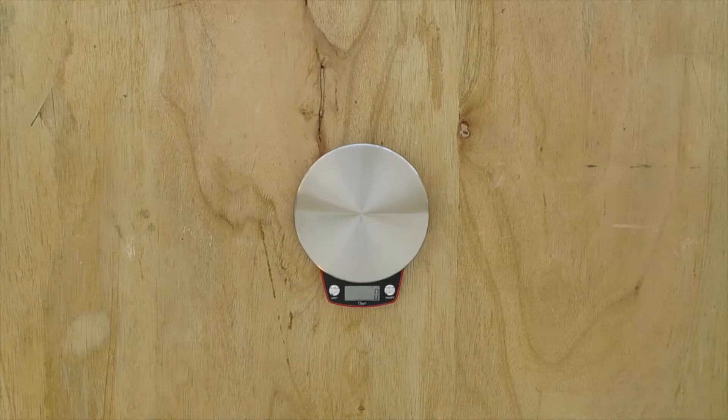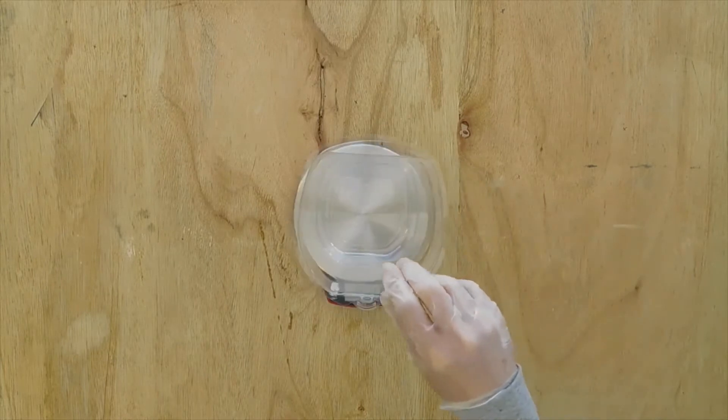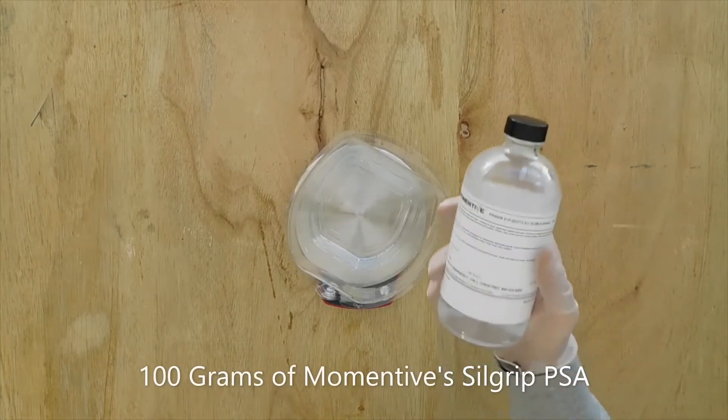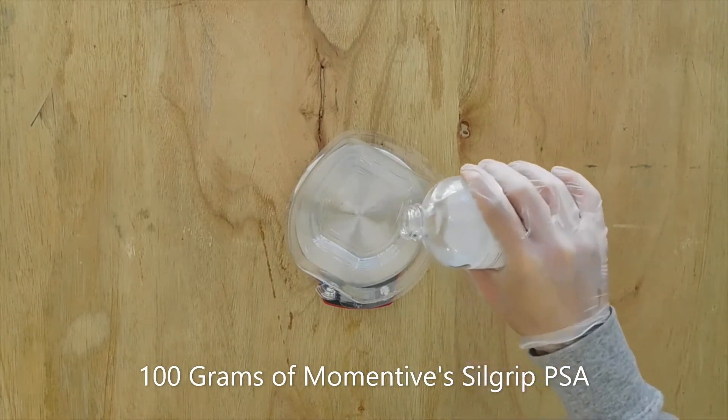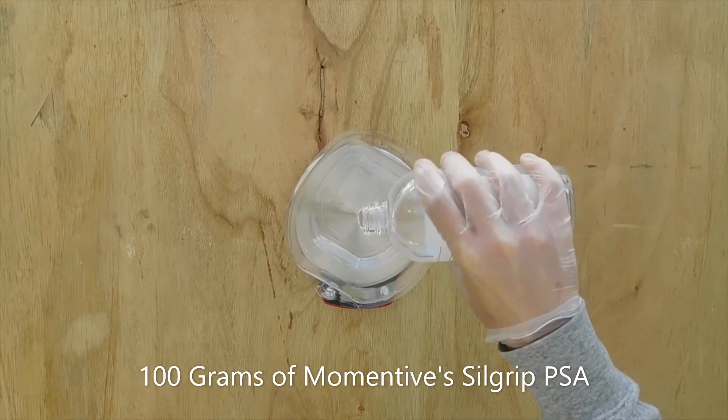Turn on your scale. Place the cup or container on the scale, then zero out the scale. Pour Momentive's SILGRIP PSA into the cup or container on the scale. In this case I think I will need about 100 grams of SILGRIP PSA material.